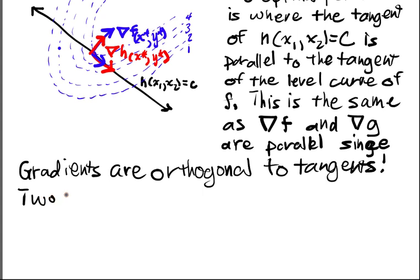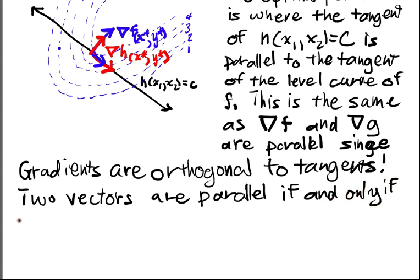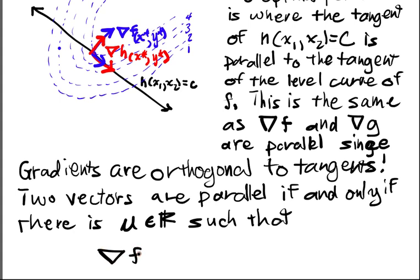Two vectors are parallel if and only if there is a μ, some real number such that the gradient of f at this point x star, y star is equal to μ times the gradient of g at this point x star, y star.